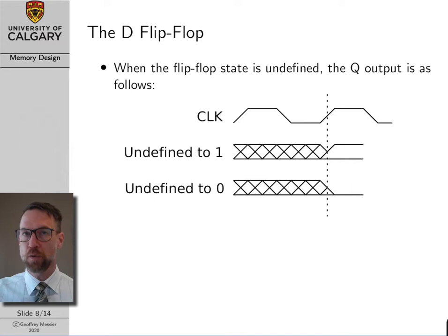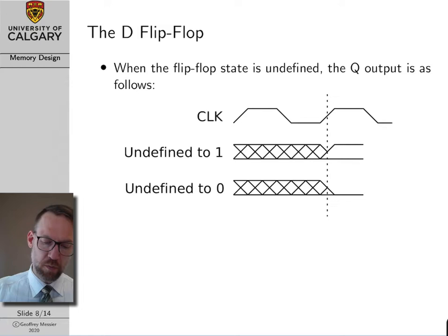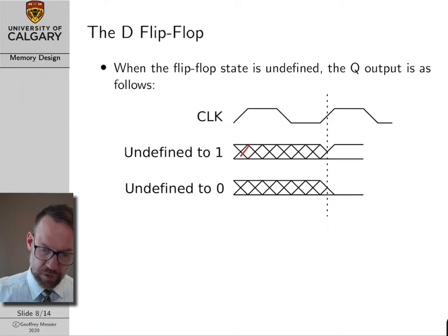Sometimes after we first power up the device, we haven't yet had a rising edge to clock any state into the D flip-flop, so we're not sure what the state is. If we had to draw the Q output line in this case, we'd use cross-hatching between zero and one to represent that we don't know the state. If on a rising clock edge we make a transition to one, we show a rising edge to one. If we know we're making a transition to zero, the cross-hatch pattern ends with a falling edge to zero.